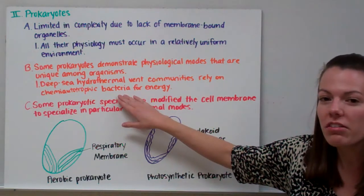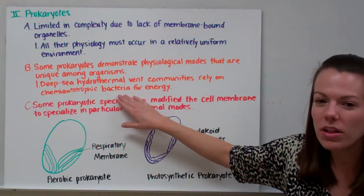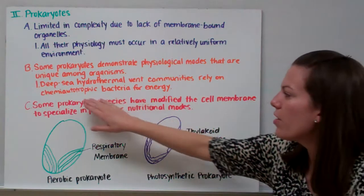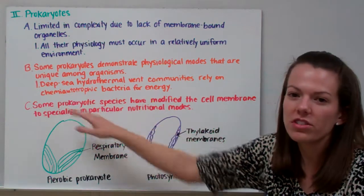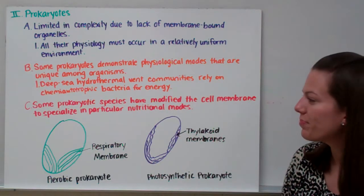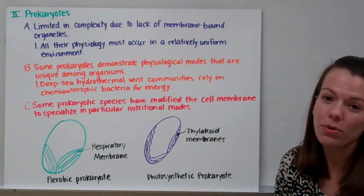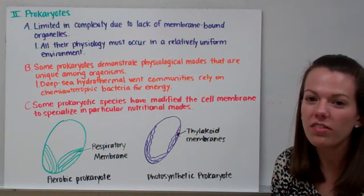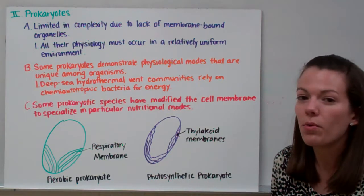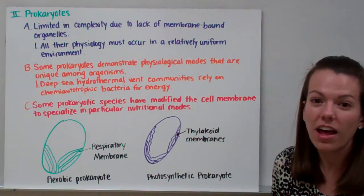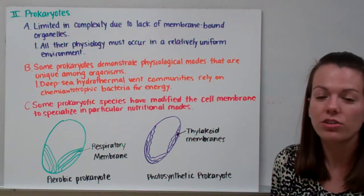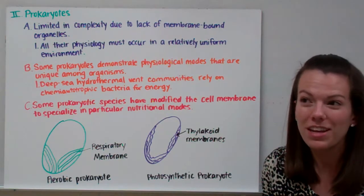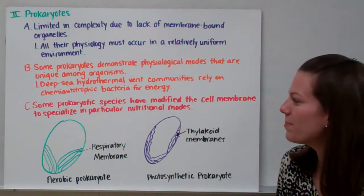Chemiotrophic bacteria are able to capture energy, somewhat like photoautotrophs do, but they capture that energy from different chemicals oozing out of Earth's crust. They are the producers in these communities — there are no plants down there, so all other fish and organisms rely on these chemiotrophic bacteria as producers for the ecosystem.